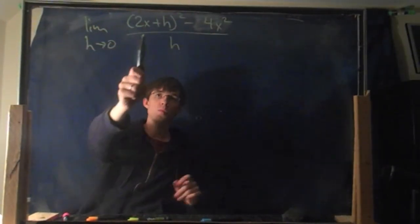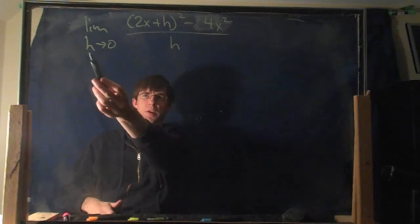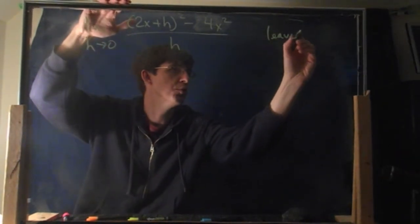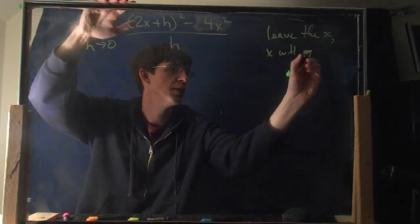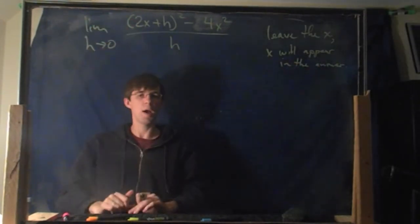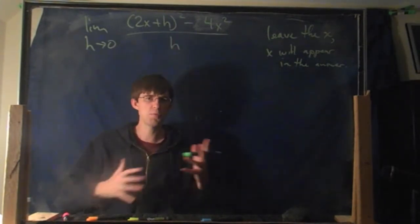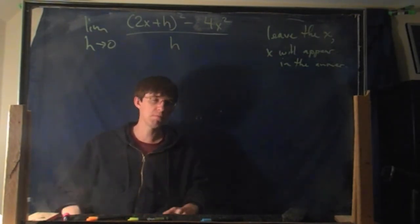One last example. Sometimes you're going to have extra variables inside your formula that you're taking the limit of. What do you do with the x while trying to take the limit with h? Here's what you do: you leave the x. It'll be in the answer. X will appear in the answer, so you don't do anything special. It's a little weird, but there's no problem — your answer is just going to have an x in it.